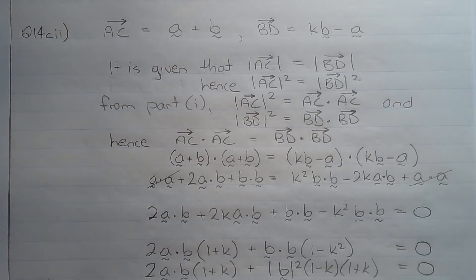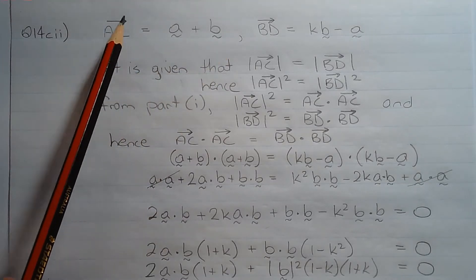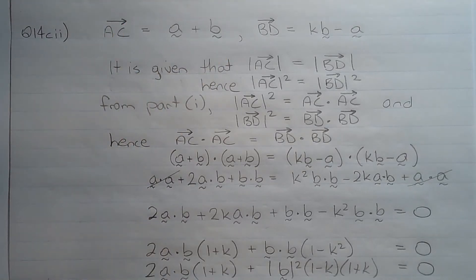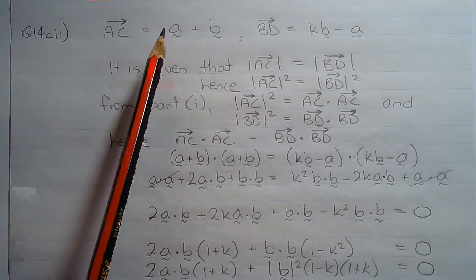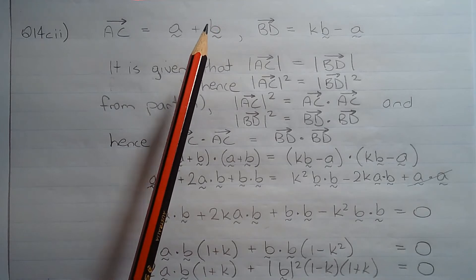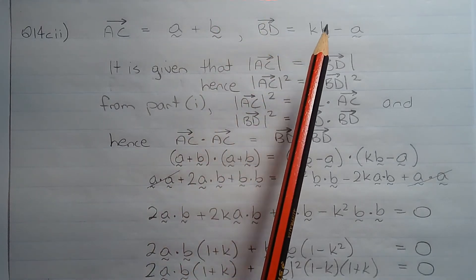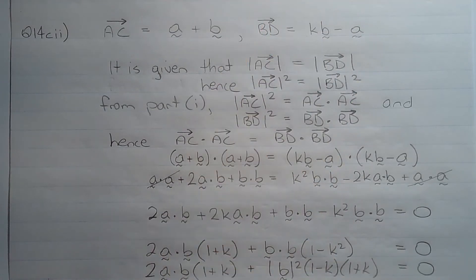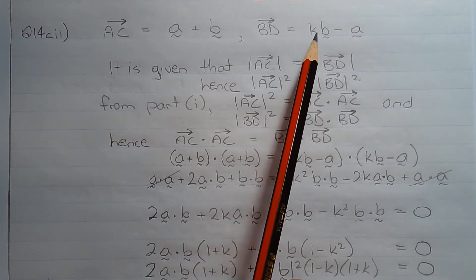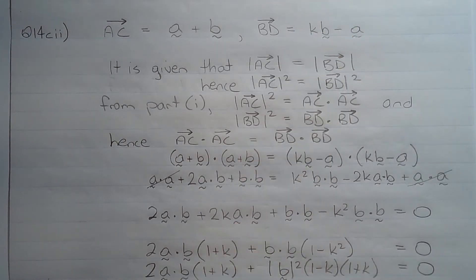From the diagram, vector AC is equal to vector a plus vector b, where vector AC is one of the diagonals of the trapezium expressed as the sum of vector a and vector b — vector a being the left-hand side and vector b being the top of the trapezium. And vector BD is equal to K times vector b minus vector a, where BD is the other diagonal, expressed as the difference between K times vector b (the base) and vector a (the left-hand side).